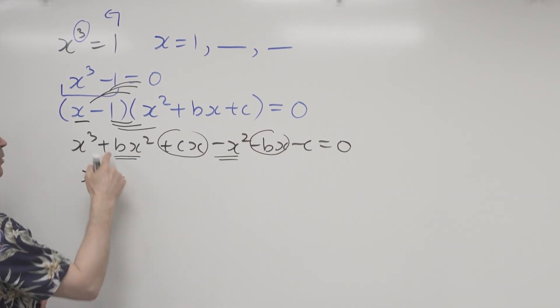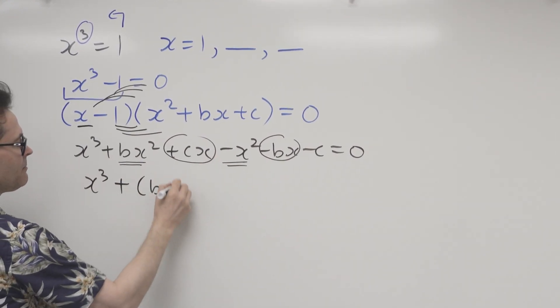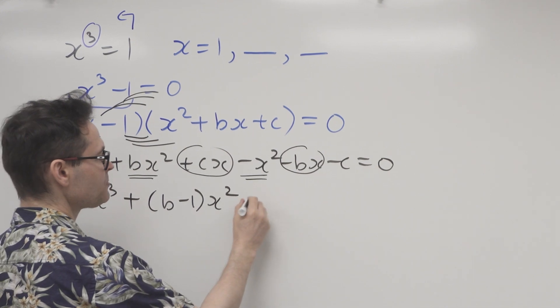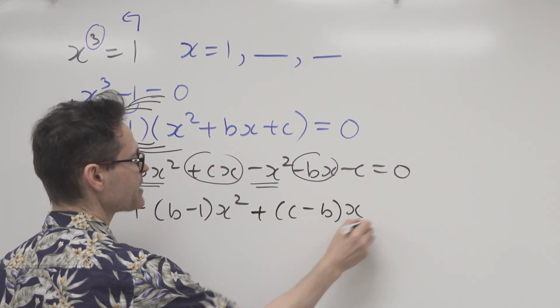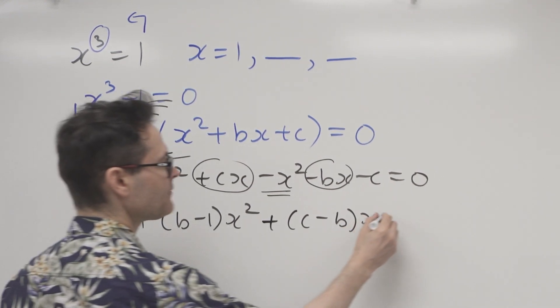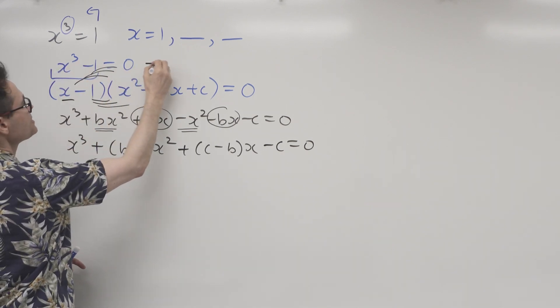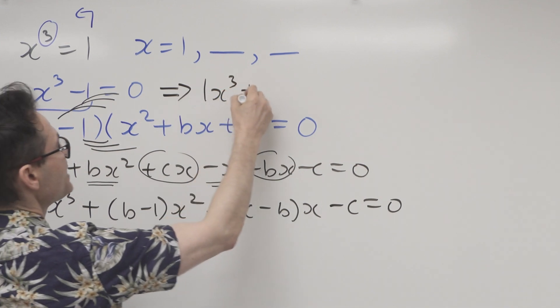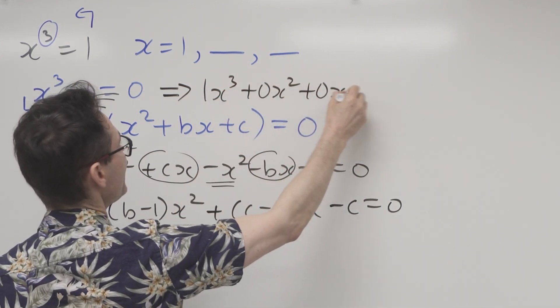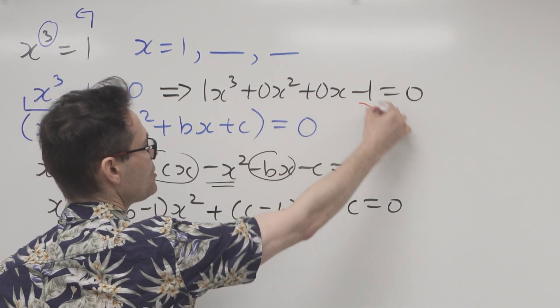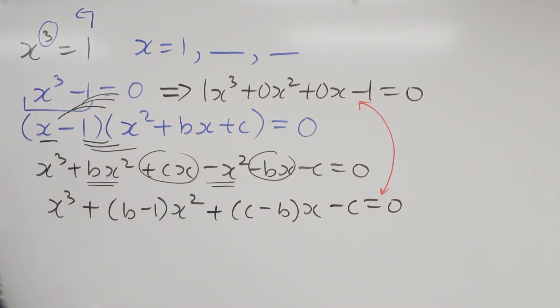So x cubed plus will be minus one is b minus one in brackets x squared, just bringing those two terms together. And then c minus b, well that's plus c minus bx, bringing those two terms together. And I've got a minus c as my constant number. And don't forget, this original could have been written, this is the same thing as one x cubed plus zero x squared plus zero x minus one equals zero.